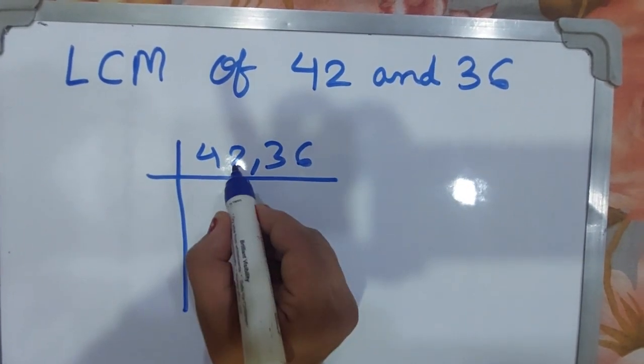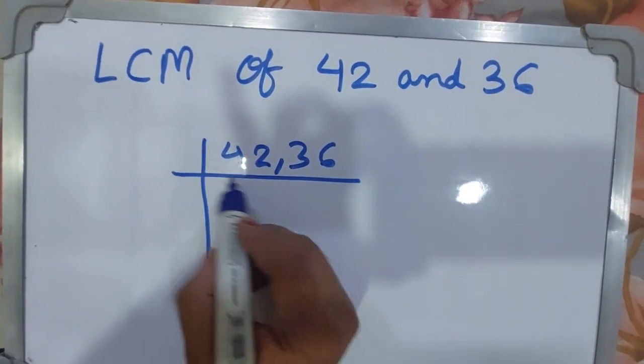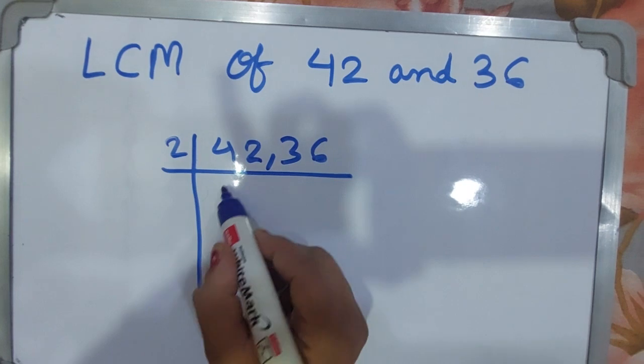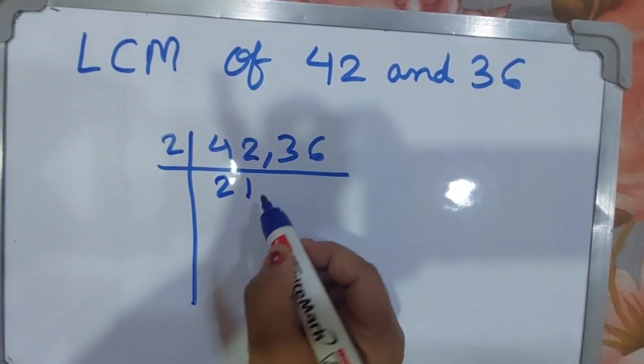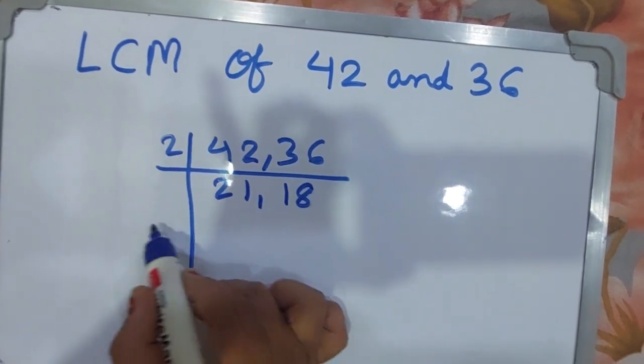First you can see that both numbers are divided by 2. Yes. Then 2 into 42: 2 ones are 2, 2 eights are 16. And 2 into 36 gives 18.